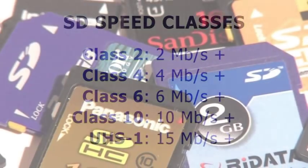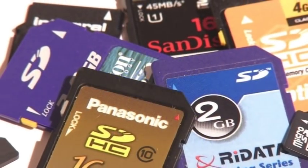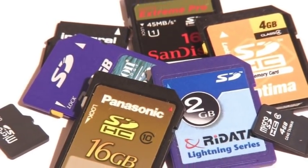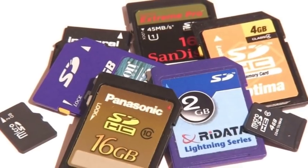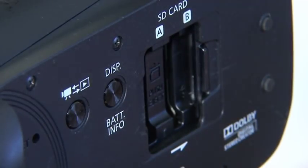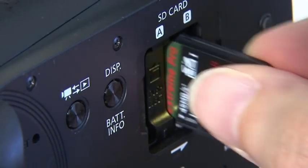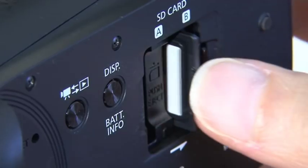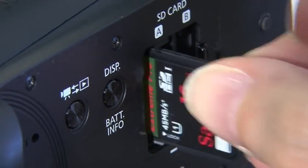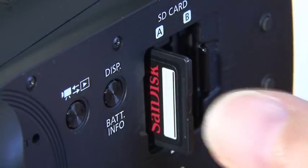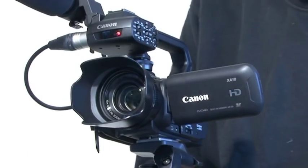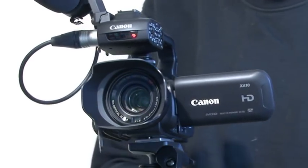The higher an SD card's speed class, the faster it will be but the more it will cost. For most purposes, Class 4 or Class 6 cards are fine. That said, Class 10 or UHS 1 are best for high definition video or when otherwise handling large quantities of data.